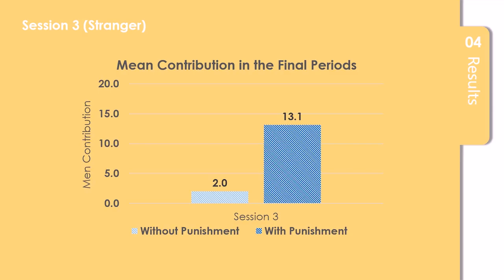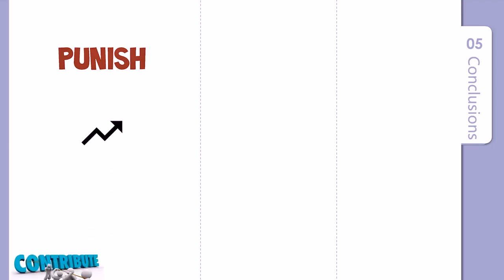Although the study is subject to the limitation of a laboratory setting, it has many important implications. First, it is suggested that in both stranger and partner treatments, the existence of punishment opportunities largely increased the average contribution level.